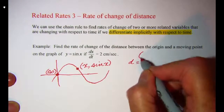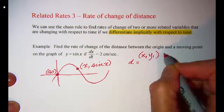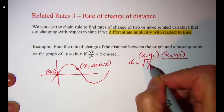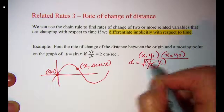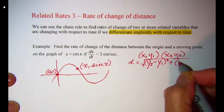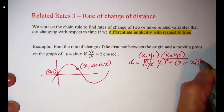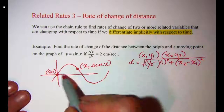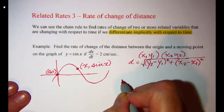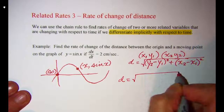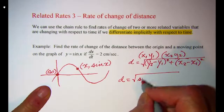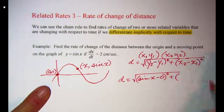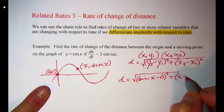Recall that the distance formula between two points (x₁, y₁) and (x₂, y₂) is the square root of (y₂ minus y₁) squared plus (x₂ minus x₁) squared. So our distance between the origin and our moving point is going to be the square root of (sine x minus 0) squared plus (x minus 0) squared.